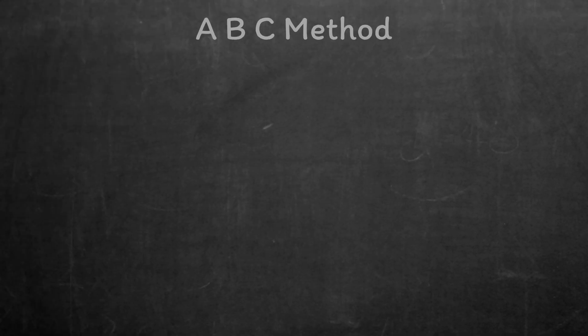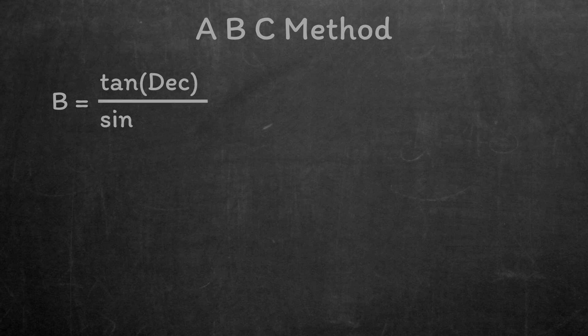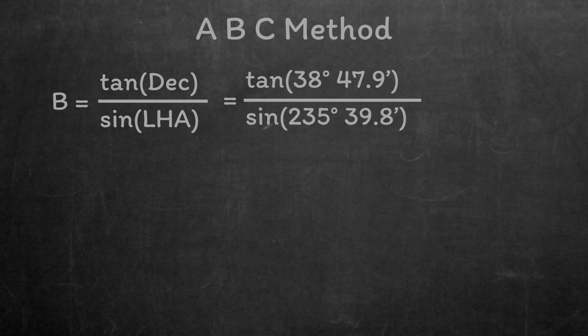Now B. B is found using tan of the declination divided by sine of the local hour angle. Again, you could read this straight from Nori's. I use my calculator and I find B equals minus 0.97364. You actually just ignore the minus sign as we work out what to do with it in the next step.